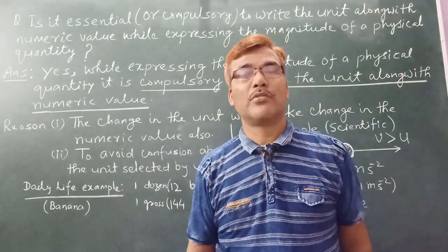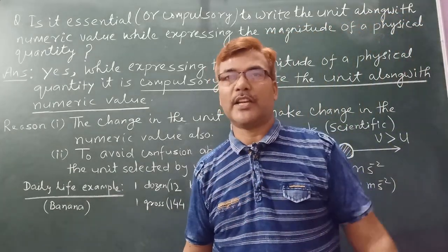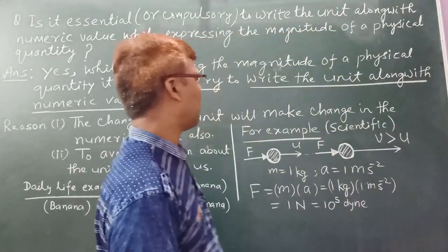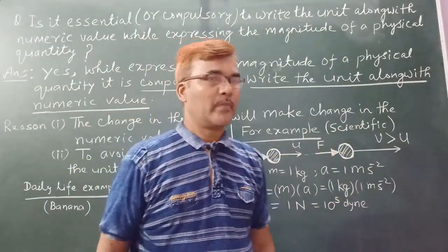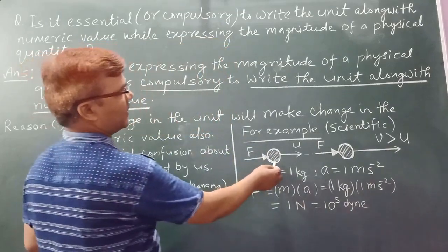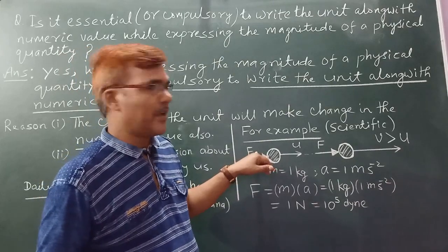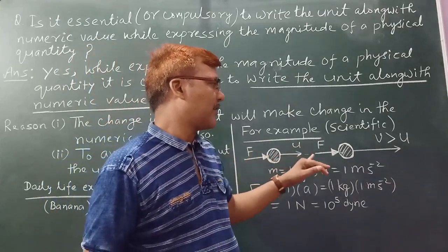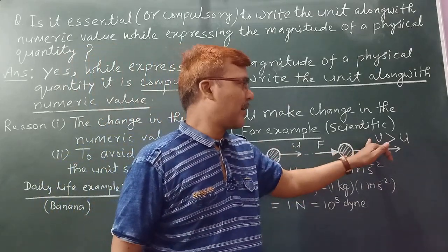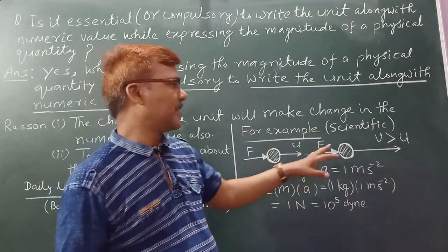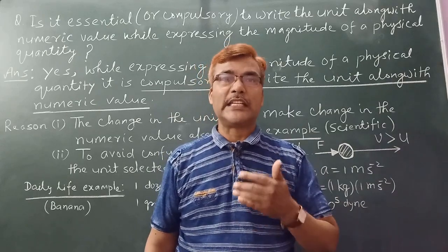Now let me explain some examples. First, some scientific examples. Here is an object with mass of 1 kg. You have to put force on it. First the speed of this object was u, and the speed becomes v, which is more than u. This means we are talking about acceleration, meaning the velocity of the body is increasing.